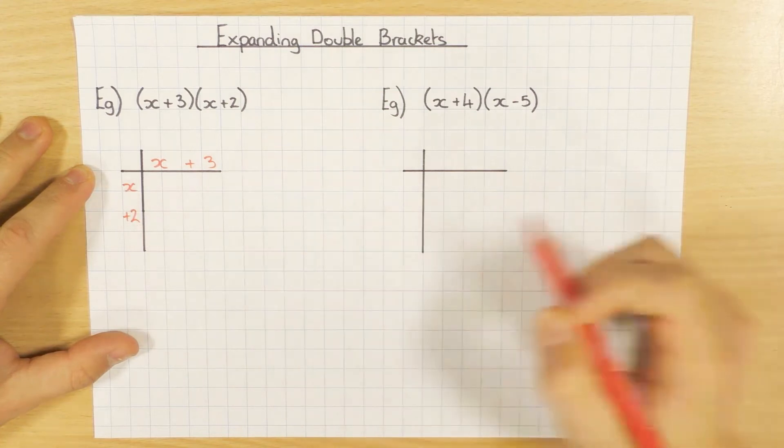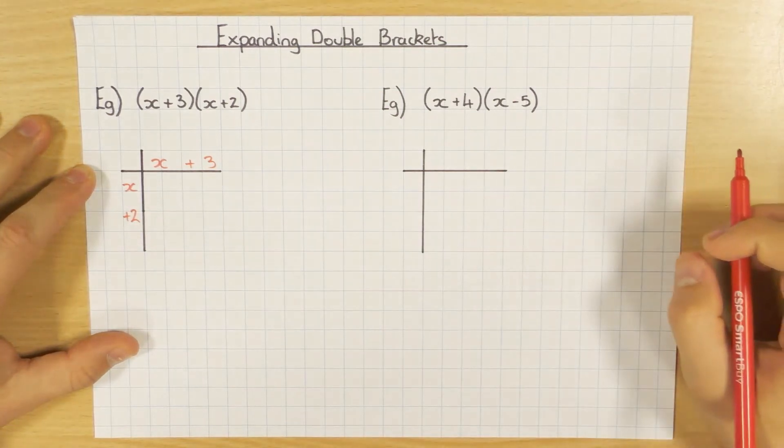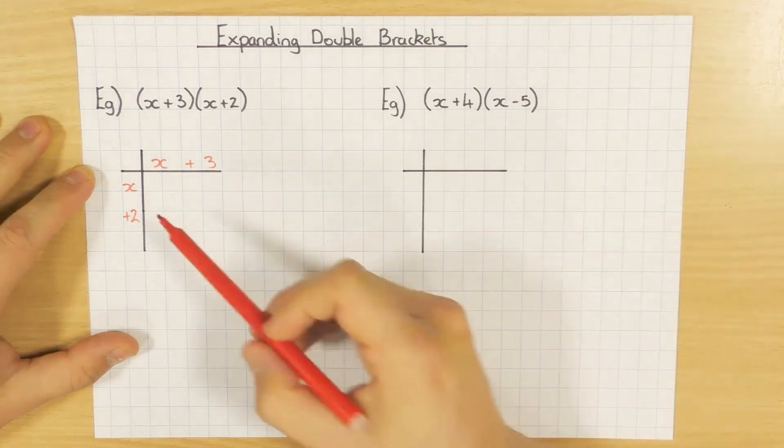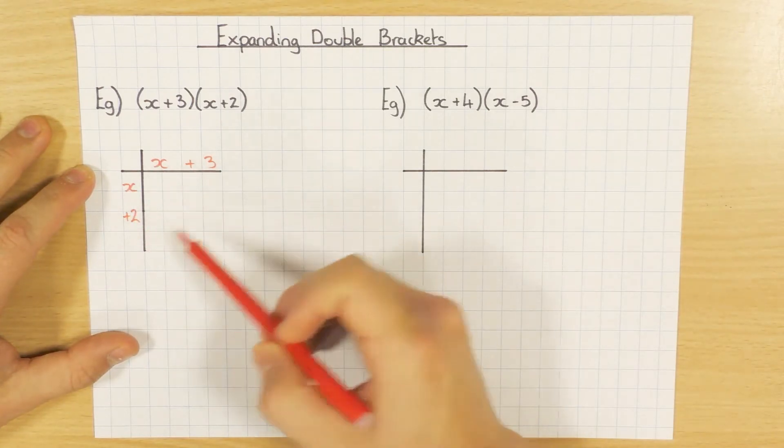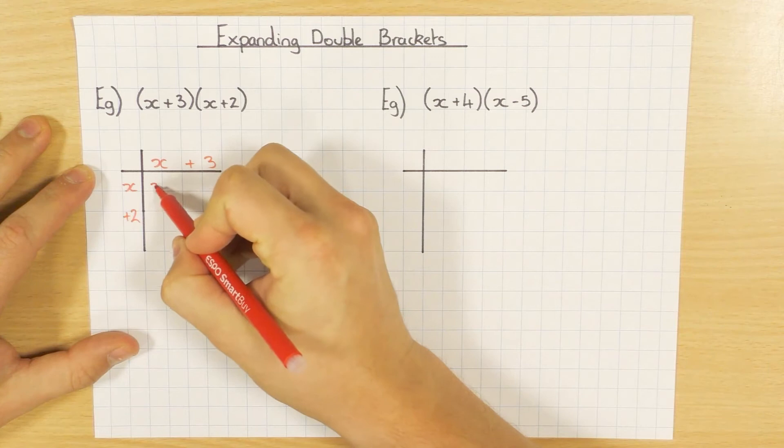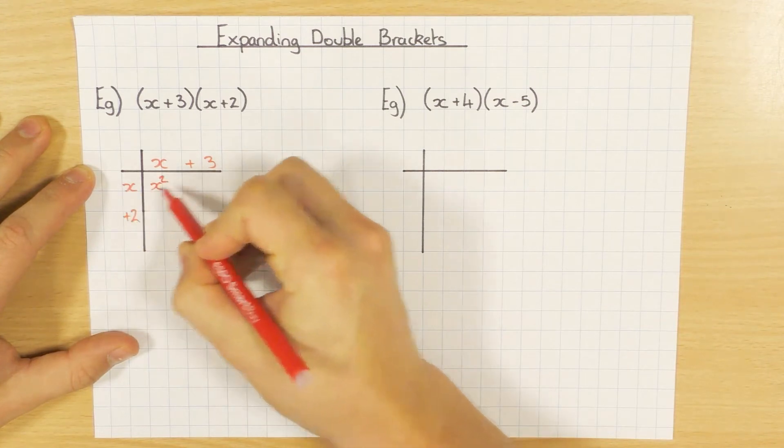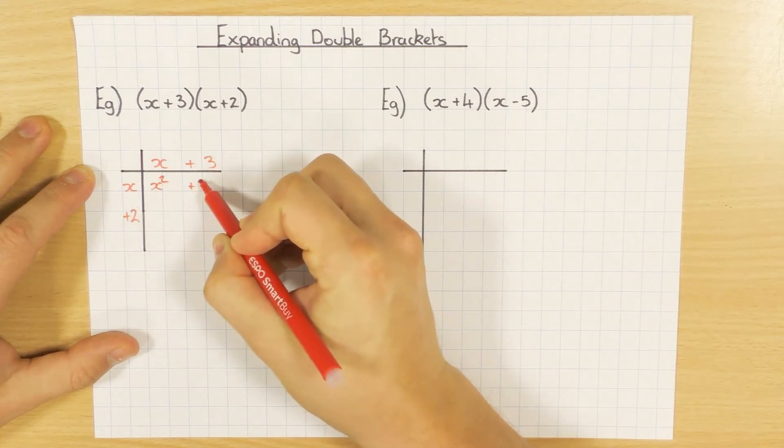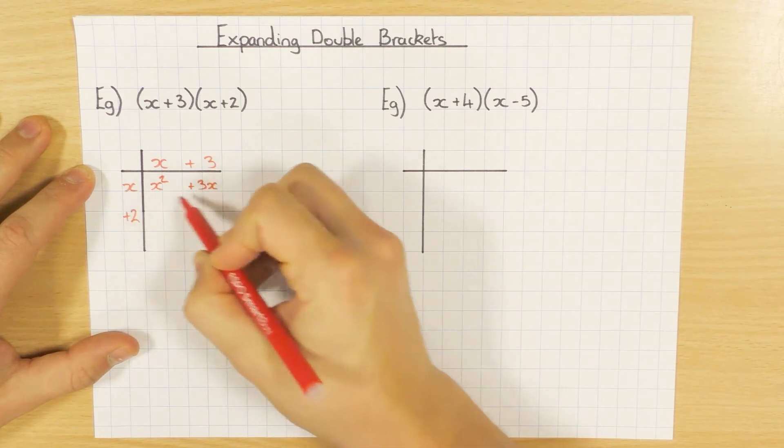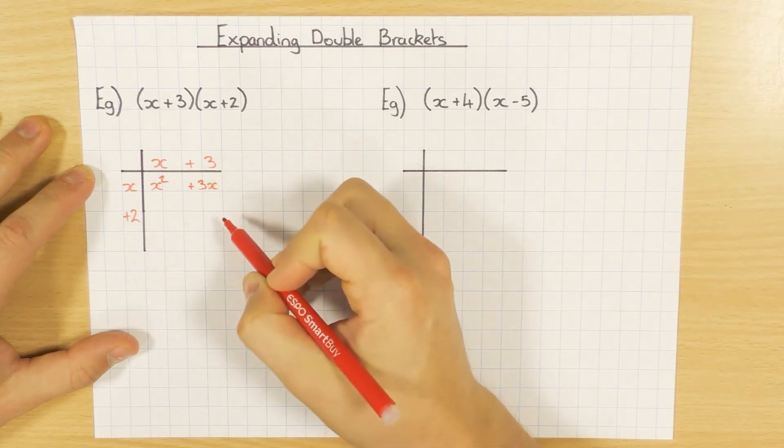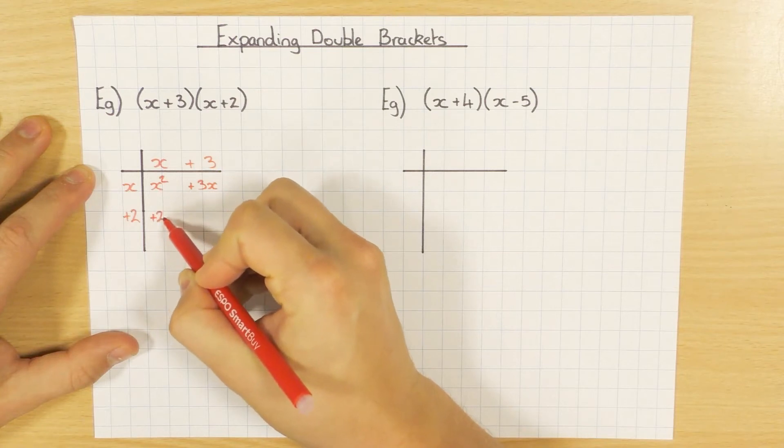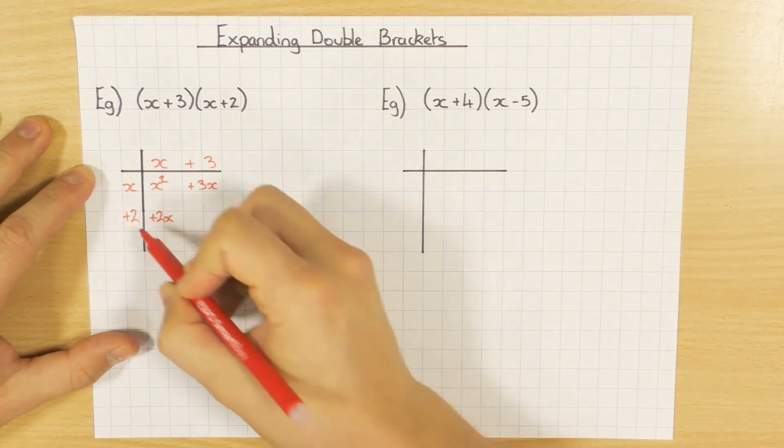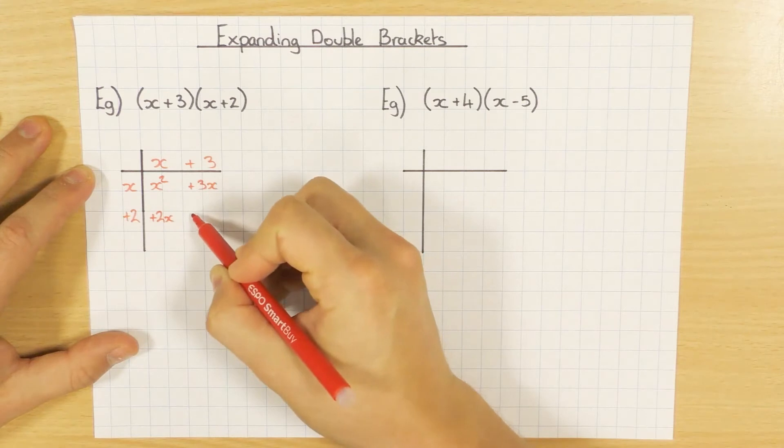And the second bracket I just put down the side. Now hopefully you can remember from when you're expanding single brackets, we are multiplying. So I need to multiply everything here to fill in the grid. So x times x is x squared, x times 3 is 3x. Notice I put plus 3x there because it's positive, just helps us later on. And 2 times x is 2x, again plus 2x to show it's positive, and 2 times 3 is 6.